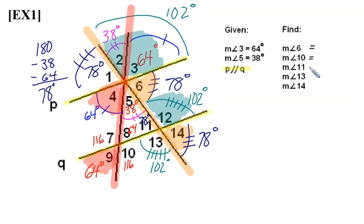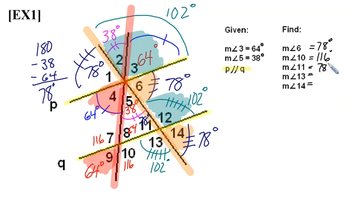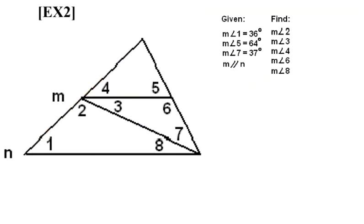Finally, we come back and answer the original question. Angle 6 was 78 degrees. The measure of angle 10 was 116 degrees. The measure of angle 11 is 78 degrees. The measure of angle 13 is 102 degrees. And the measure of angle 14 is 78 degrees. That's our first example, and we have one more example to consider in this video.